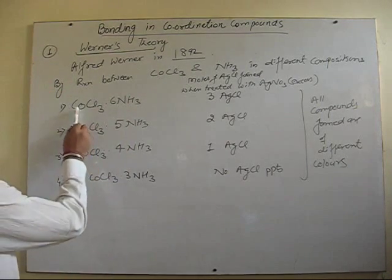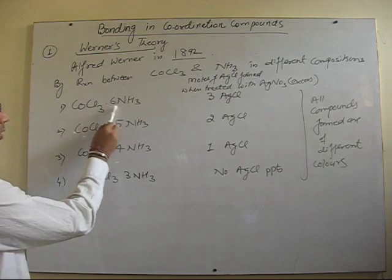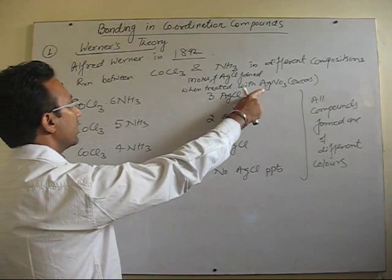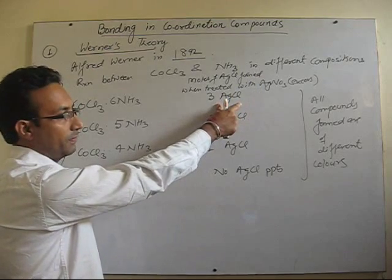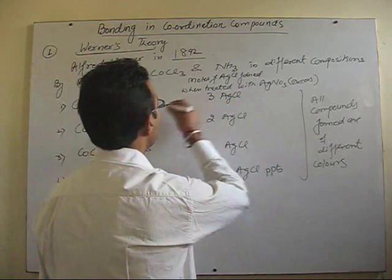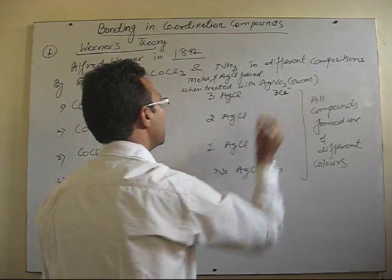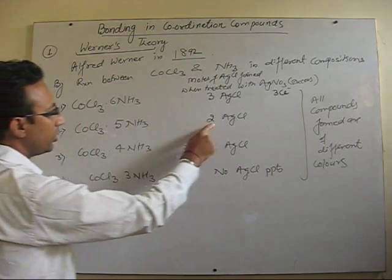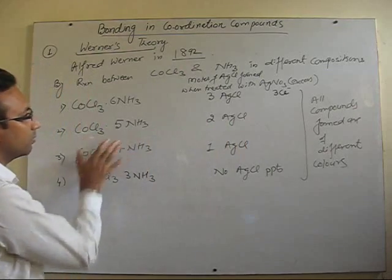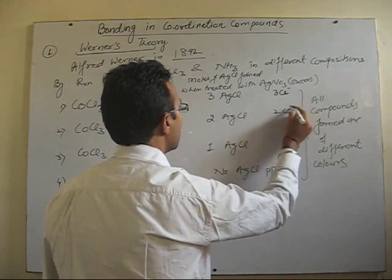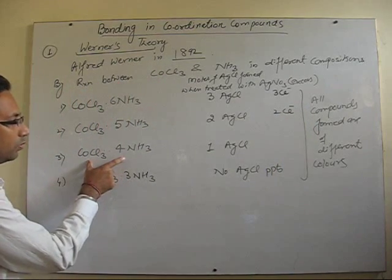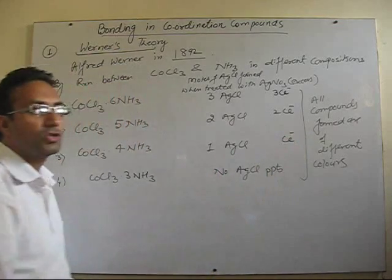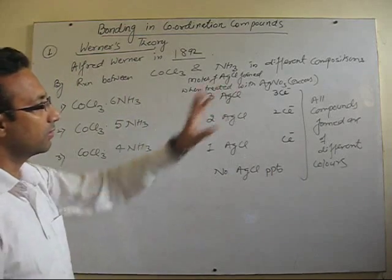What he found: in the first case, the compound with that molecular formula, when dissolved in aqueous solution followed by silver nitrate test, gives 3 moles of AgCl — showing that this compound gives 3 free Cl⁻ ions in solution. In the second case, you get 2 AgCl, meaning only 2 free Cl⁻ ions. In the third case, it gives 1 AgCl, meaning only 1 Cl⁻ is free in aqueous solution to react with silver nitrate.